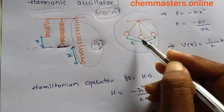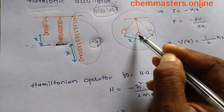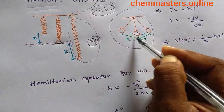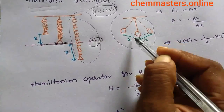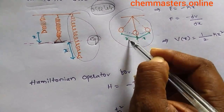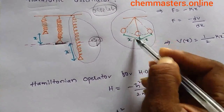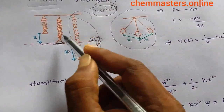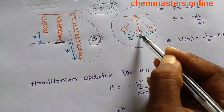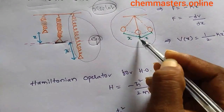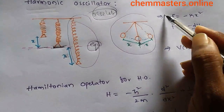Similarly, for the pendulum, this is the equilibrium position. When oscillations occur, the distance from equilibrium is x on either side. The restoring force of the pendulum or the spring is directly proportional to the displacement from the equilibrium position.